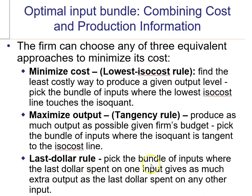A firm will pick the bundle of inputs where its last dollar spent on an input such as capital provides as much additional output as the last dollar spent on the other input, labor. In other words, you get a similar bang for your buck from that last dollar from each of your two inputs. Because if spending one dollar more on a worker got you more output than spending a dollar on a machine, you would simply reallocate — spend a dollar more on workers and a dollar less on machines. So at the optimum, the last dollar you spend on a machine gets you the same output as the last dollar spent on a worker.